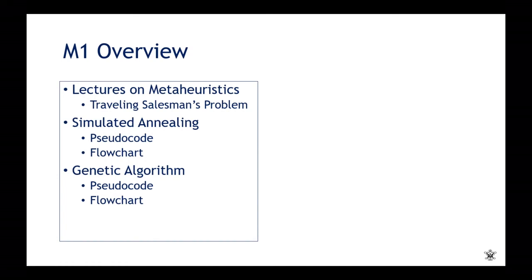I want to give you a short overview of what we're going to do in Module 1. You will watch lectures on metaheuristics, focusing specifically on the traveling salesman problem, and that is the focus of our homework assignment, which I'll elaborate later. You will also watch a lecture on simulated annealing, and please pay attention to the algorithm because you will have to create the pseudocode and also the flowchart for simulated annealing.